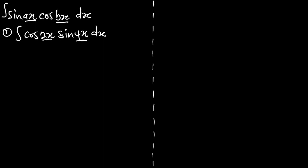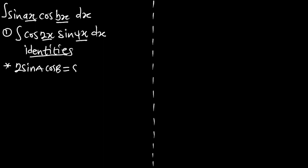Before we can do this, we must know some identities — some trick identities which can help us integrate such forms. The first identity: we can expand 2 sin(A) cos(B) as sin(A+B) plus sin(A-B).